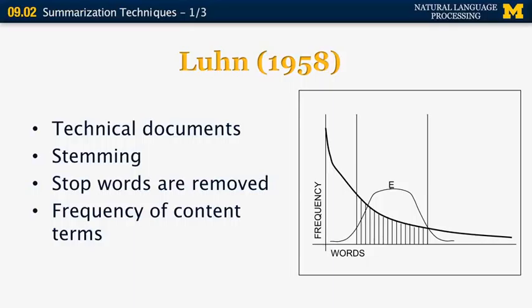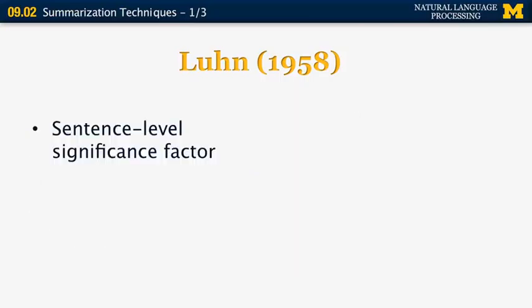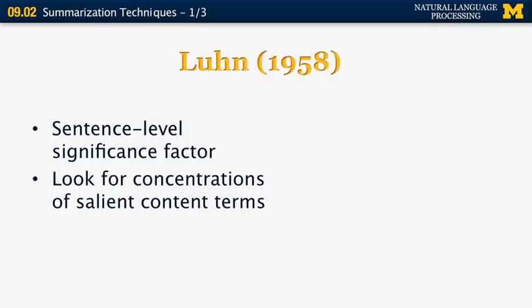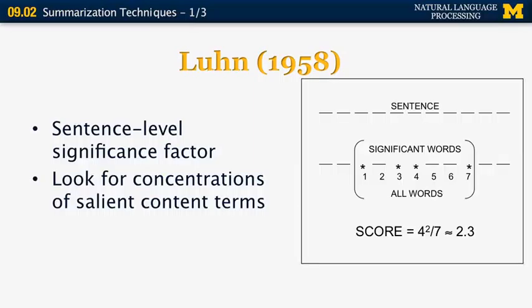Sentences that contain those mid-frequency words are deemed more worthy of inclusion in the summary. There is a sentence-level significance factor based on the presence of words with high E values. Luhn wanted to pick sentences with a large concentration of salient content terms. For example, if you have four significant words appearing within a span of seven words, the score for that cluster is four squared divided by seven, about 2.3. This metric focuses on significant words and their high concentration near each other rather than being dispersed around the document.